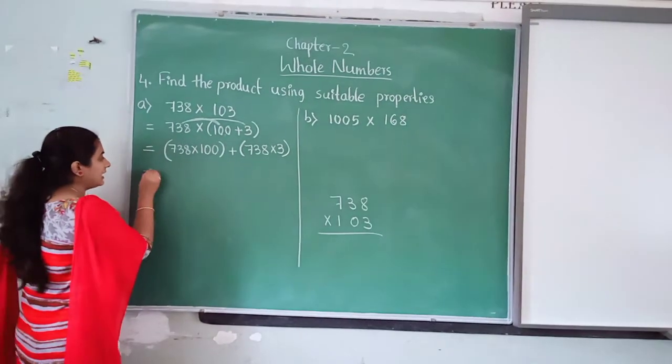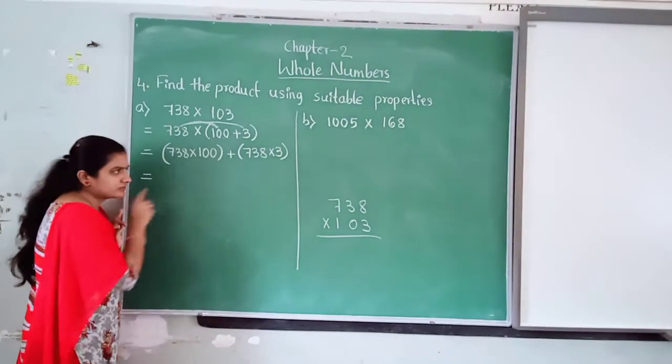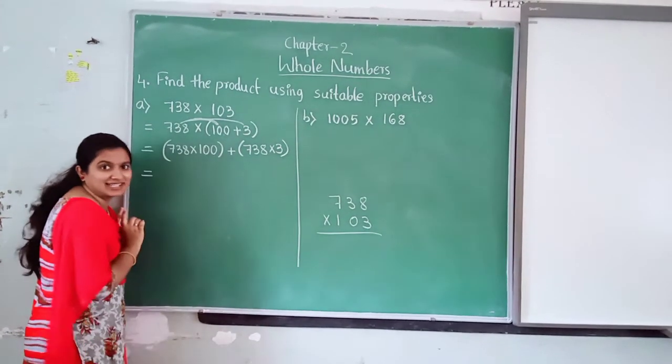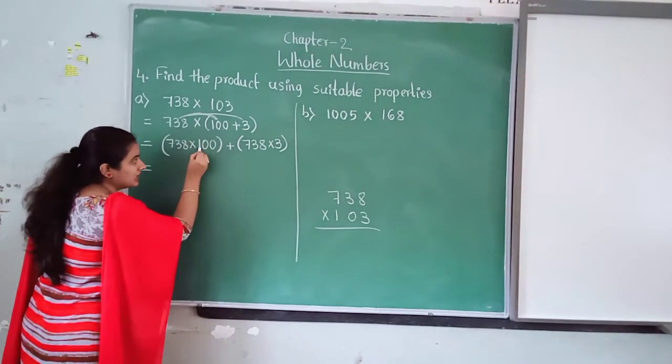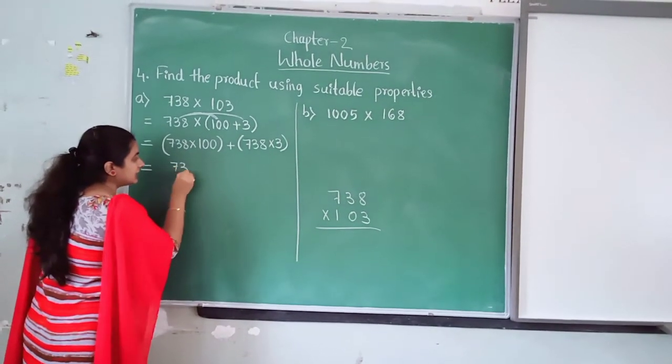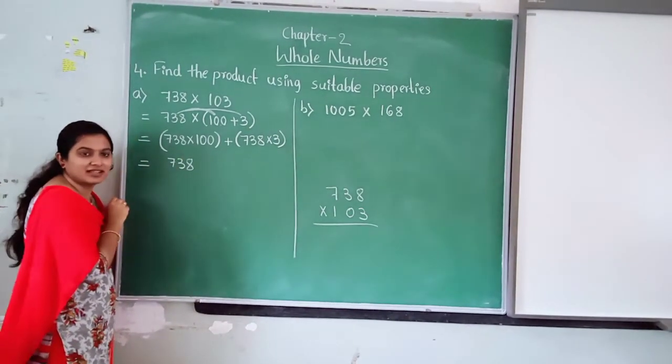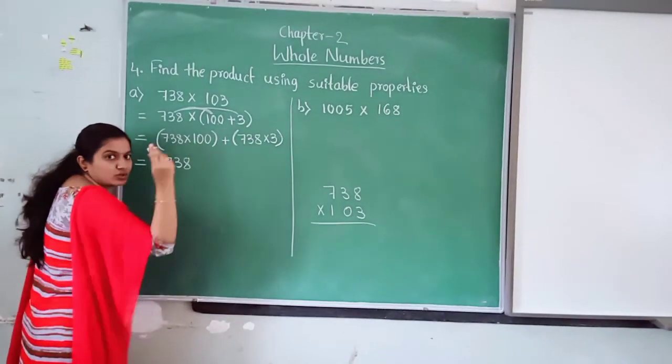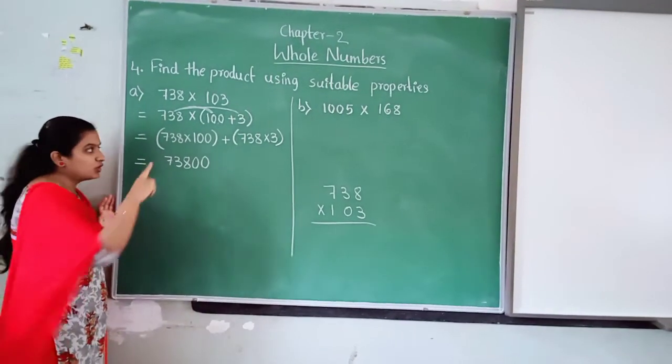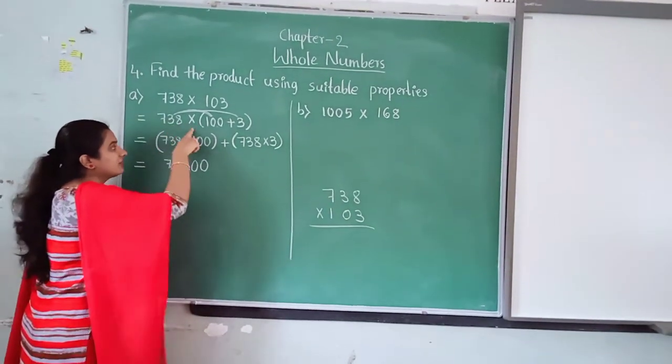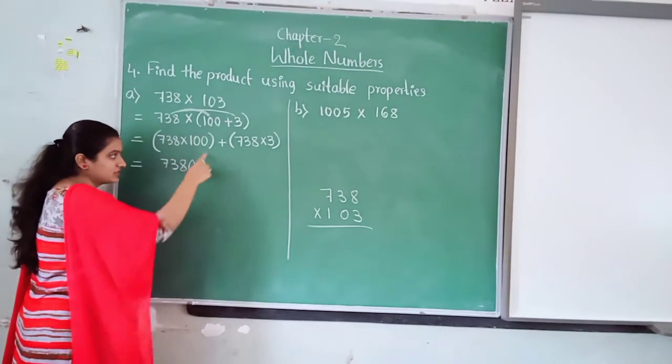Now, writing in line. How to write in line? Again, don't do rough work here. Very easy, children. 738 into 100. 738. How many zeros are there? Two zeros are there. So two zeros. No need to do rough work here. 738 ones are 738. Two zeros. After three digits put comma. Plus is there.